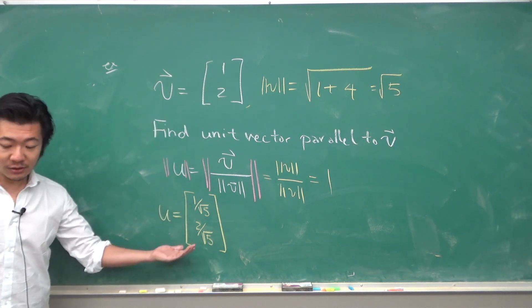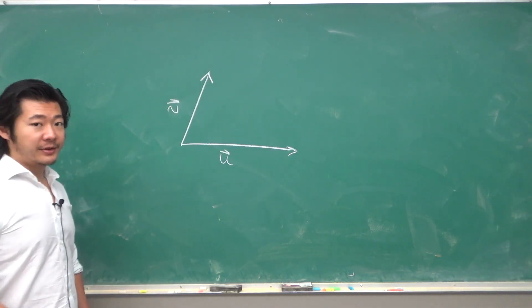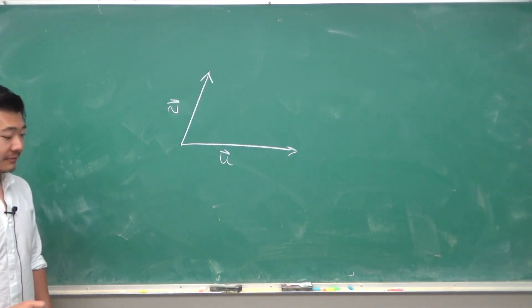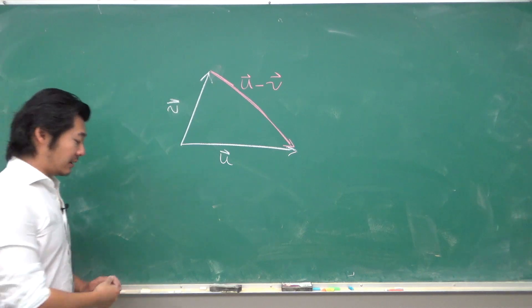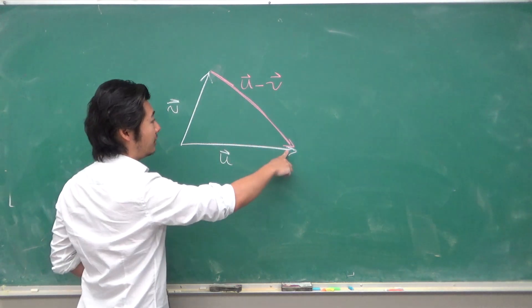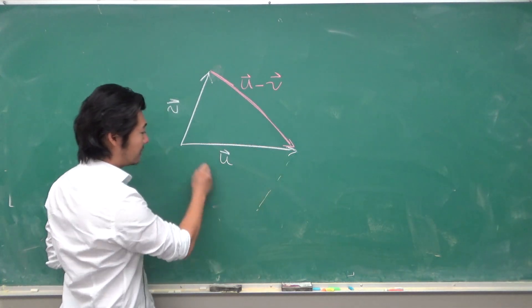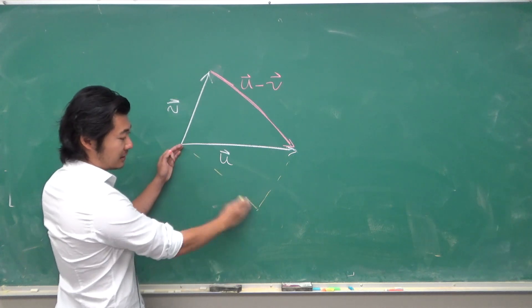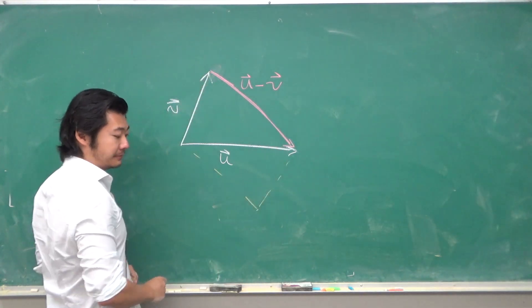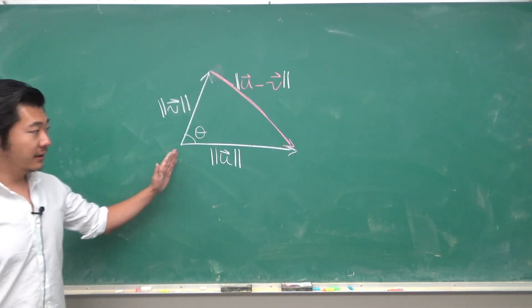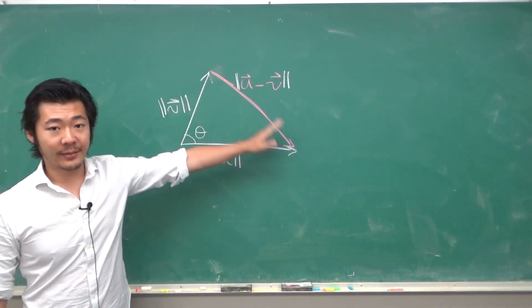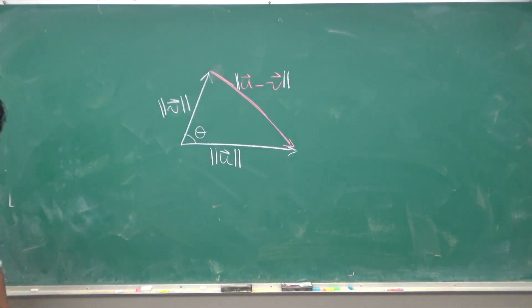Now suppose we have two vectors U and V, then this pink vector is given by the vector U minus V, because if you go U and then minus V, you end up here. This is this vector, translated over here. So in terms of their lengths, it's a triangle with length U, length V, and length U minus V. Now recall law of cosines.